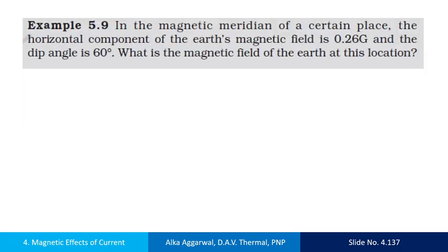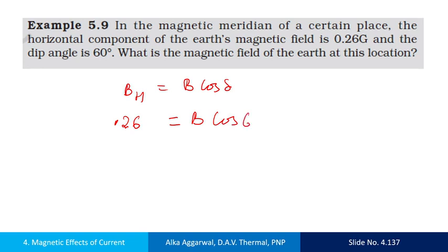Now let us see a numerical. In the magnetic meridian of a certain place, the horizontal component of the earth's magnetic field is 0.26 gauss. The horizontal component BH equals B cos delta equals 0.26 gauss. Gauss is a unit of magnetic field in the CGS system. The angle of dip is 60 degrees, and cos 60° equals 1/2. So B equals 0.26 divided by 0.5, which gives B equal to 0.52 gauss.